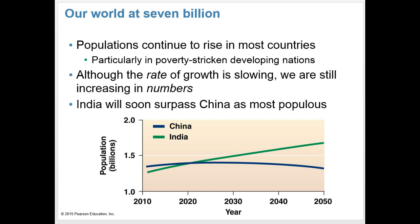China receives a great deal of attention regarding population issues because of its unique reproductive policies and status as the world's most populous nation, but China's not alone in struggling with population matters. India soon will surpass China in possessing the world's largest population. India was the first nation to implement comprehensive population control policies, but when India's policy makers introduced forced sterilization in the 1970s, the resulting outcry forced the government to change its policies. Since then, India's efforts have been more modest and less coercive than China's, focusing more on family planning and reproductive health care.